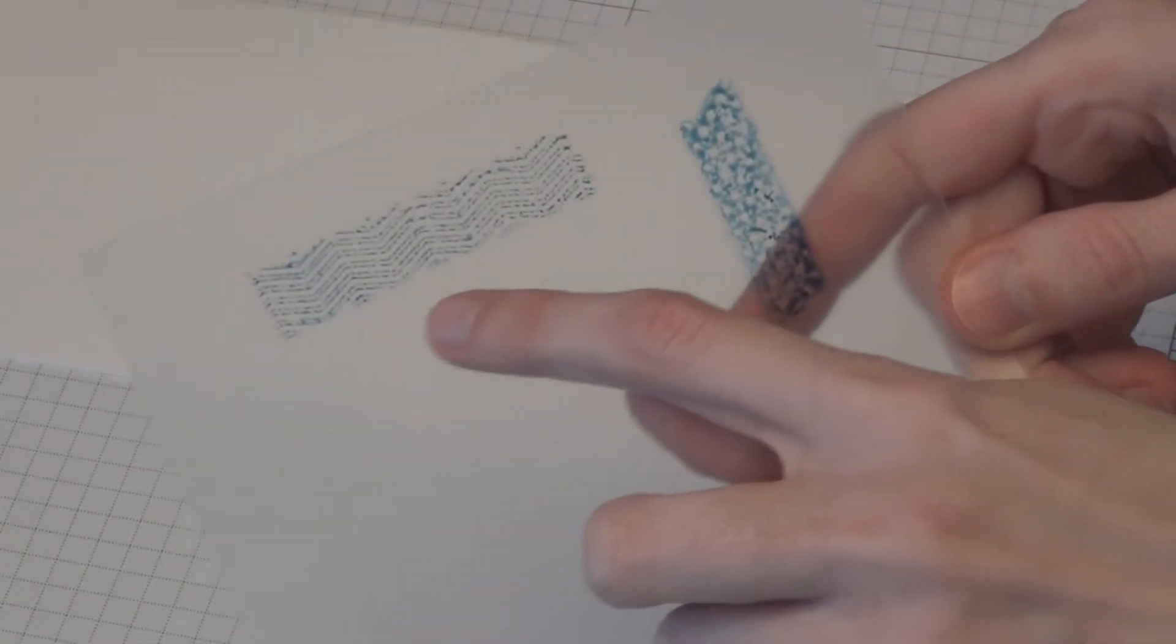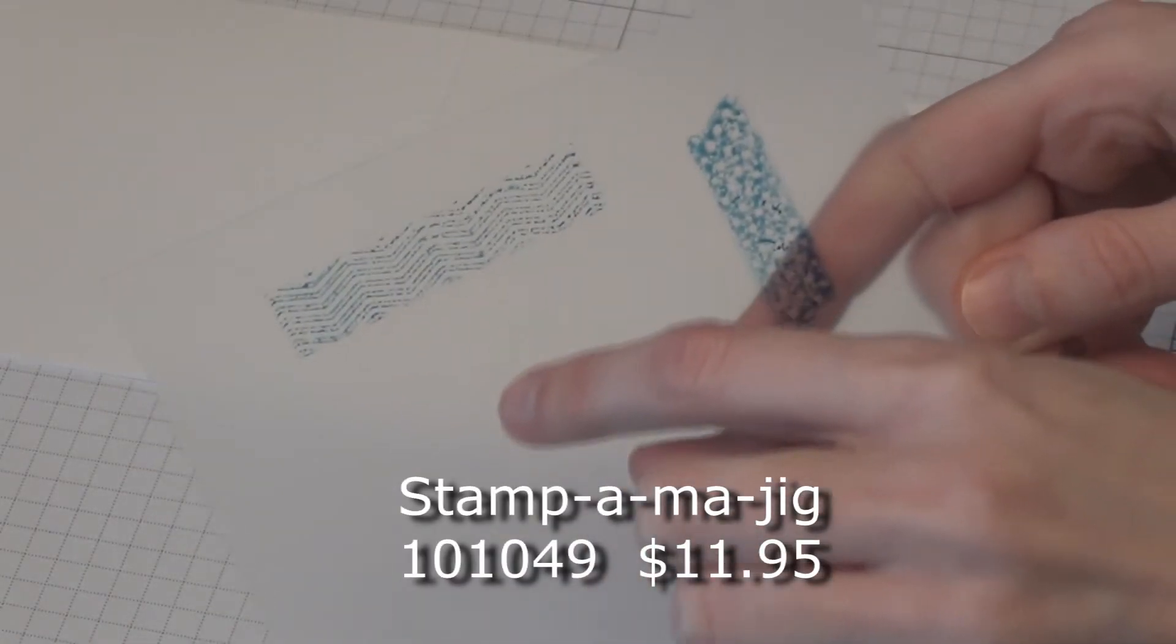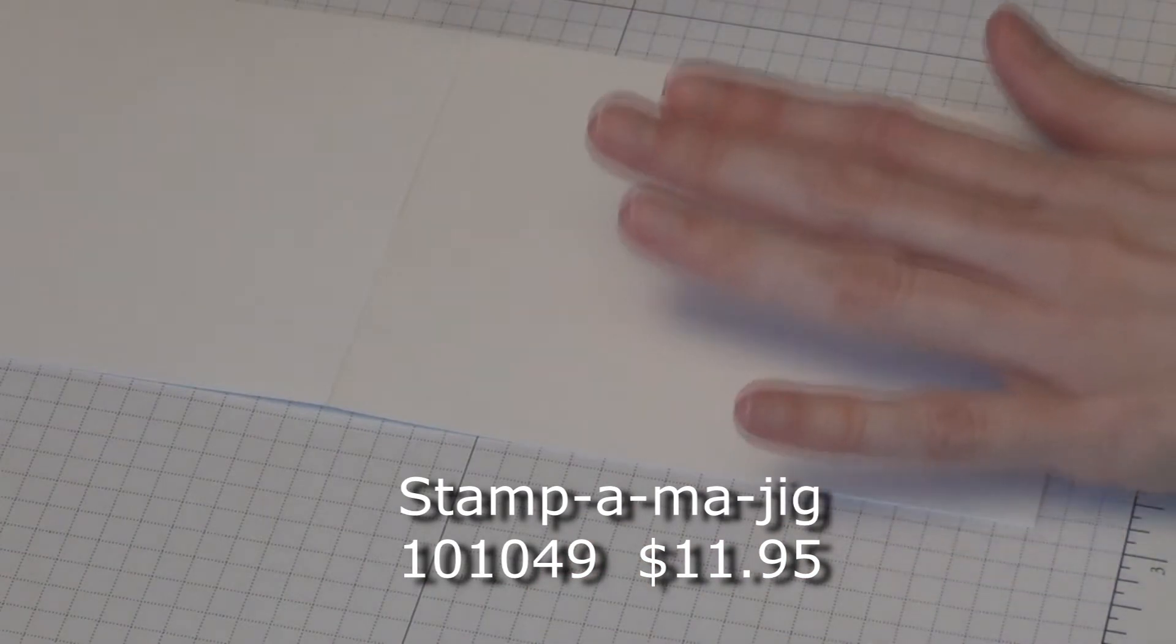I already have the chevron stamped on my Stampin' Majig. I'm going to stamp directly on the card, so I would prefer it be as straight as I can possibly get it.